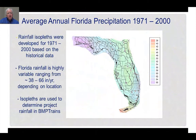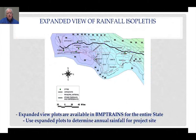Using that data, we developed the following rainfall isopleths shown on this figure. As you know, rainfall is highly variable in the State of Florida, ranging from a high of about 66 inches in western portions of the Panhandle to as low as 38 inches in Key West. The isopleths on this map are the ones used in the BMP Trains model, which includes expanded views so that you can look at a specific project and determine the appropriate rainfall for that particular area.